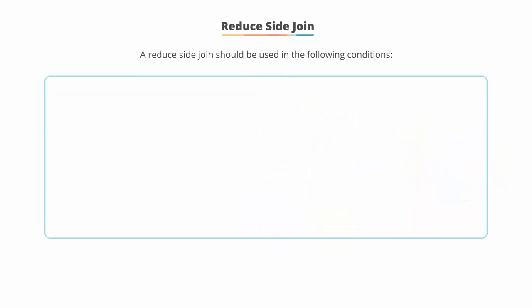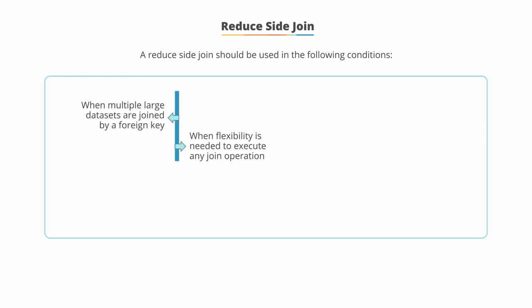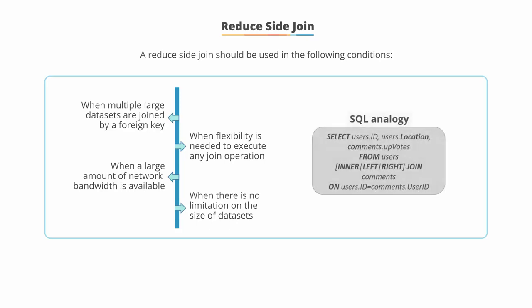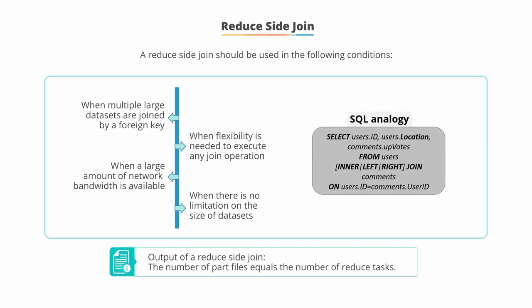A reduced side join should be used in the following conditions: when multiple large datasets are being joined by a foreign key, or when flexibility is needed to execute any join operation, or when a large amount of network bandwidth is available as we'll be moving data across the network, and also when there is no limitation on the size of datasets. The SQL analogy of a reduced side join is given on the screen. In the output of a reduced side join, the number of part files equals the number of reduce tasks. So if you have 10 reduce tasks, you will have 10 separate part files.